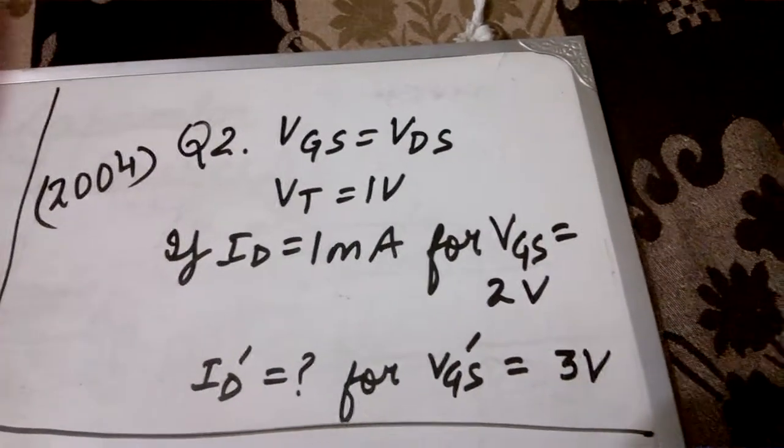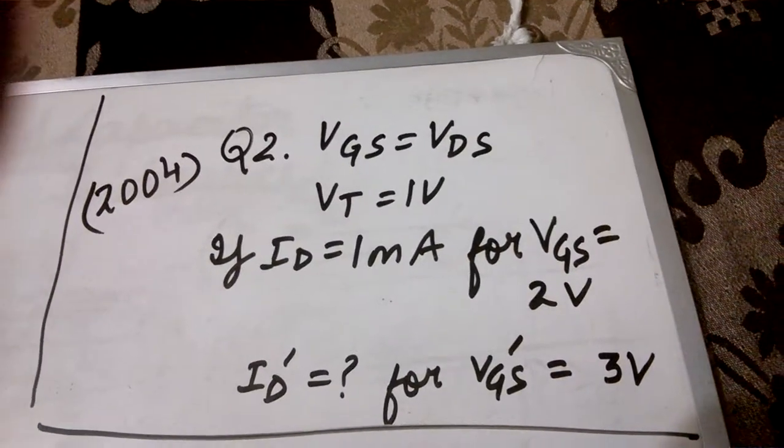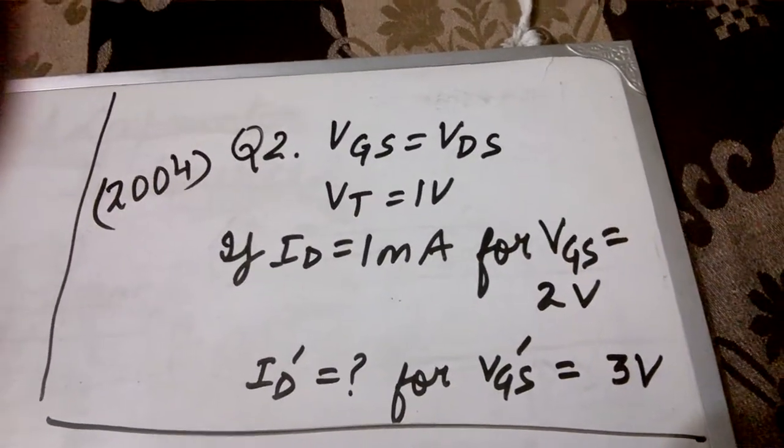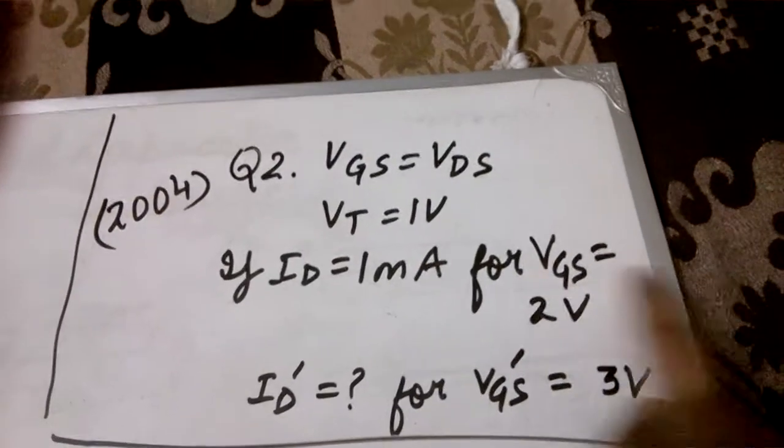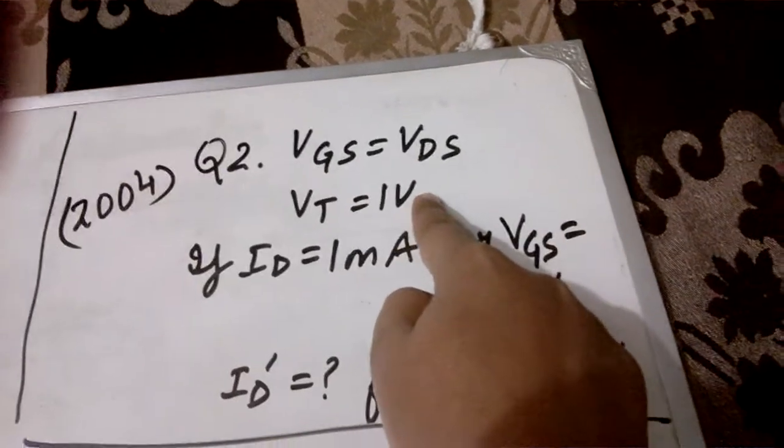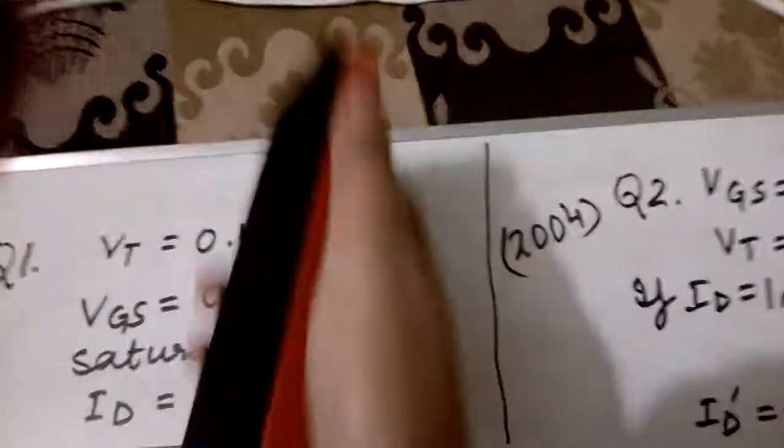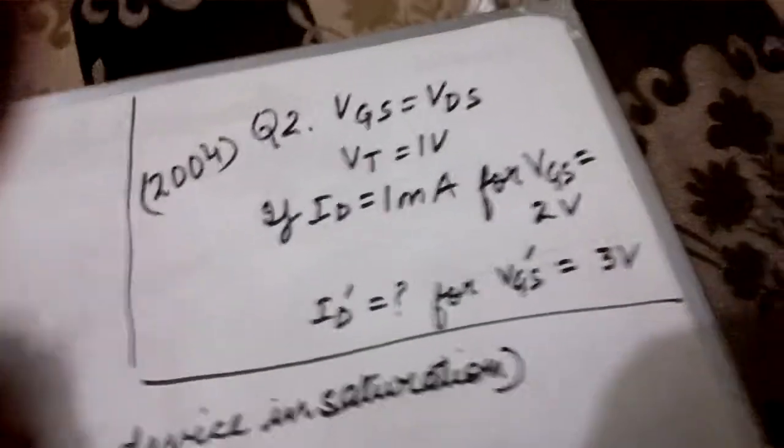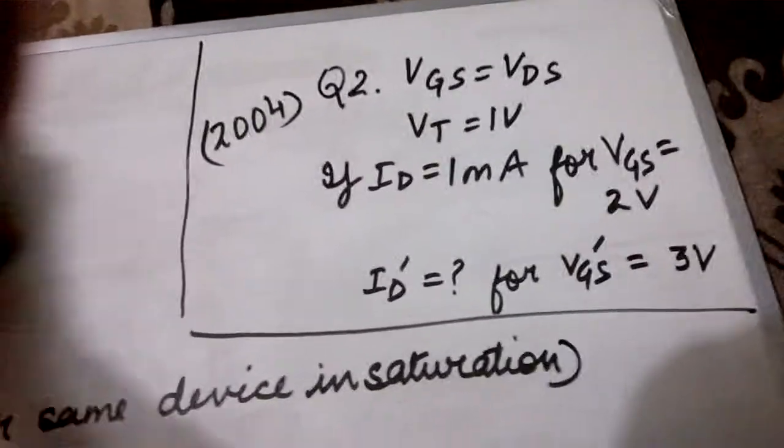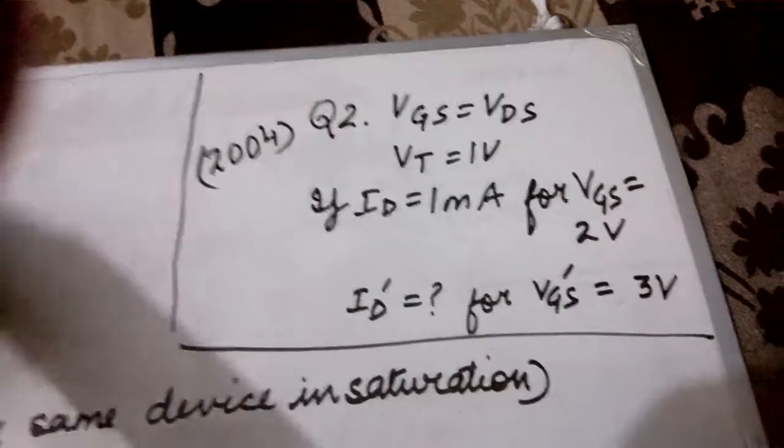Please note down here that we do not know the operation region for the MOS device. We can predict since VT is positive the device will be NMOS, but the region of operation is to be predicted. We will apply the conditions we discussed in the previous lecture.